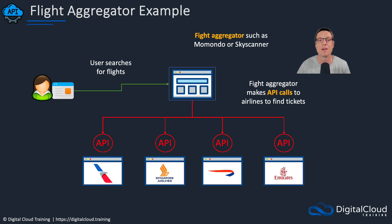That's APIs — a concept that's super important for the cloud, because as I've mentioned, everything in AWS is an API call. Every time you're changing something, an API call is being made.